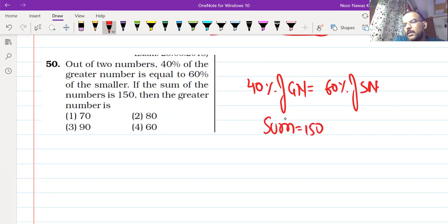It means if you have a number, you will have a greater number. So the smaller number will be 150 minus x, yes?